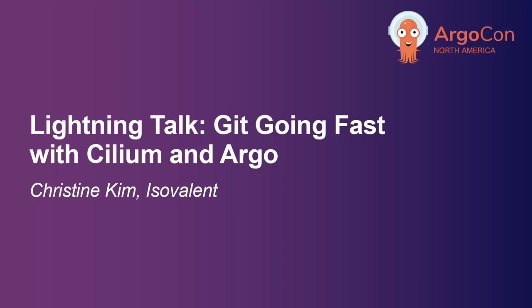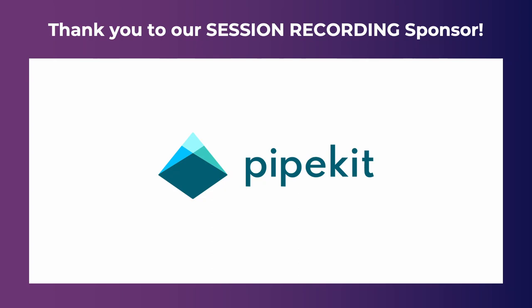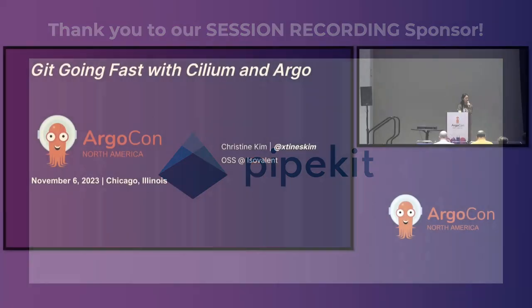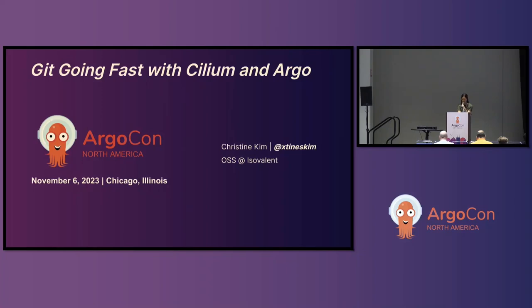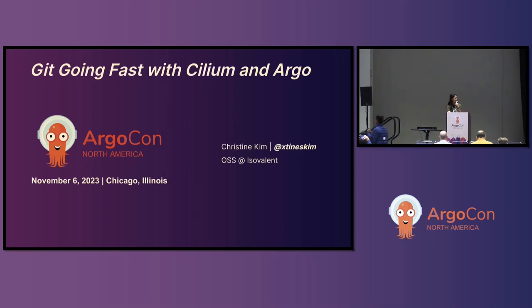Welcome to my lightning talk. My name is Christine. I work at Isovalent, which is one of the founding companies of Cilium, which is an open source project. I care about the open source ecosystem a lot and I focus around service meshes. Prior to Isovalent, I worked at Google doing service mesh stuff as well.